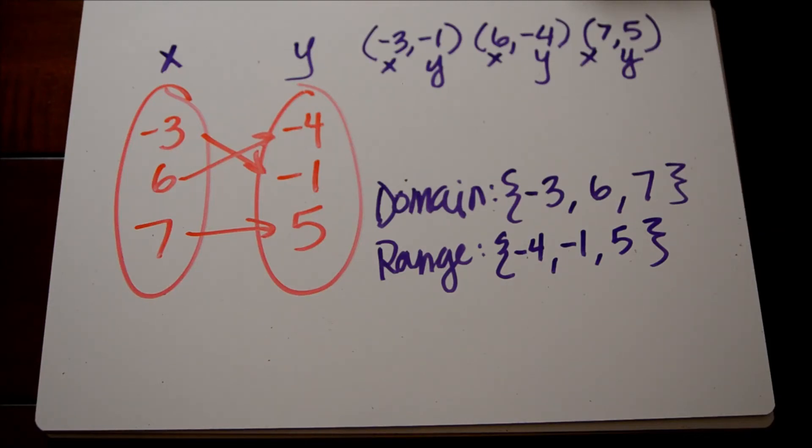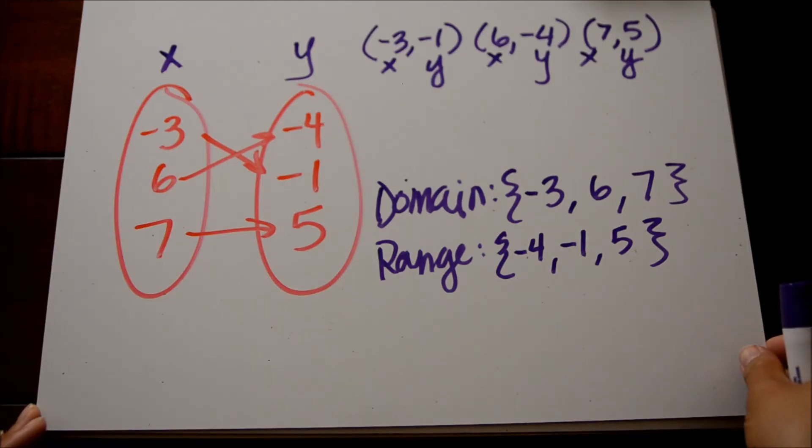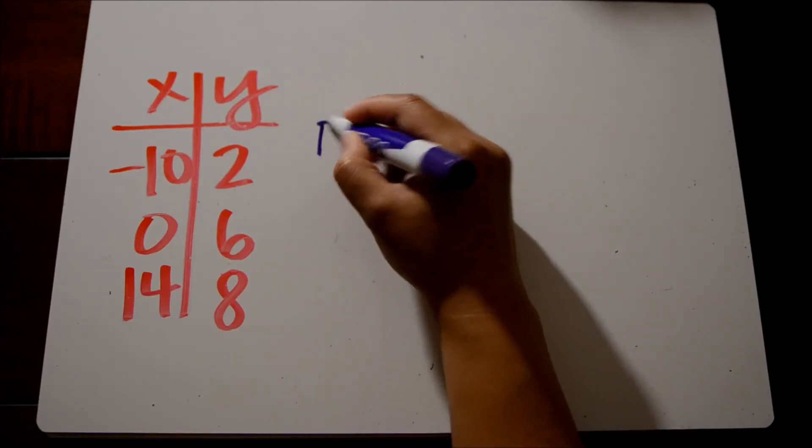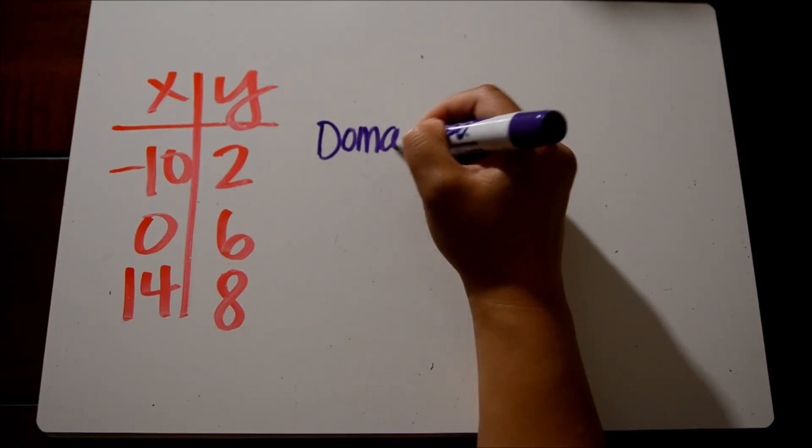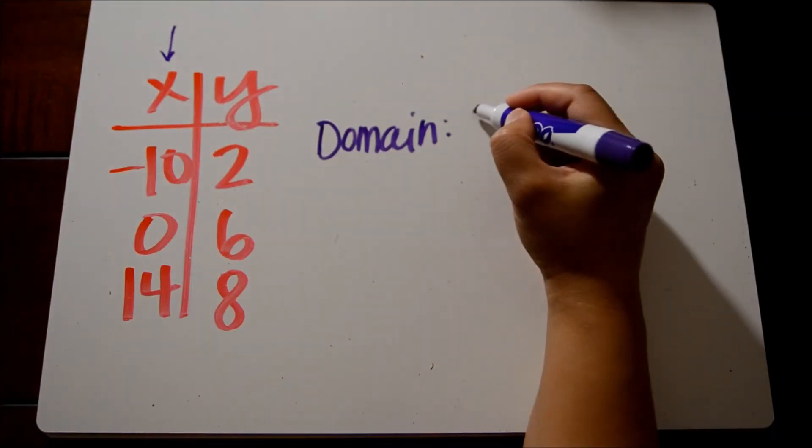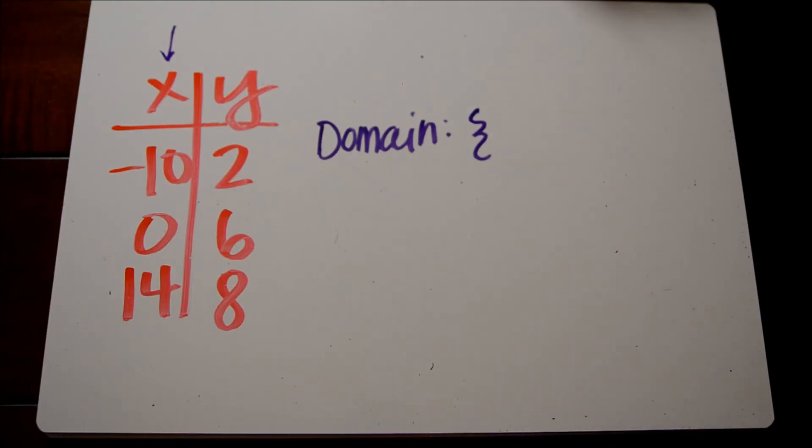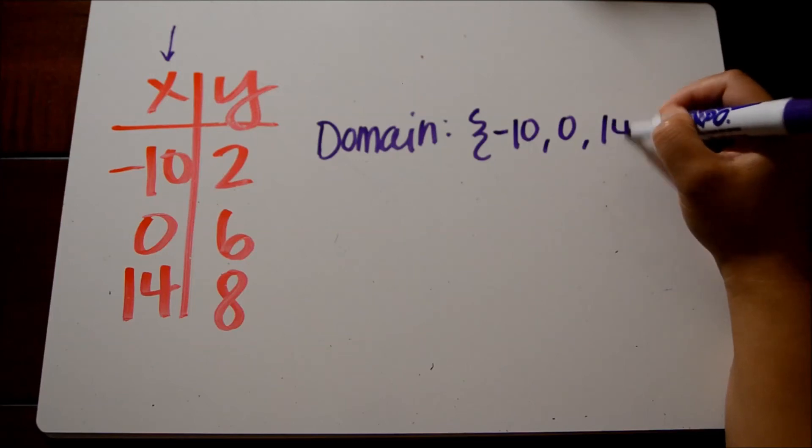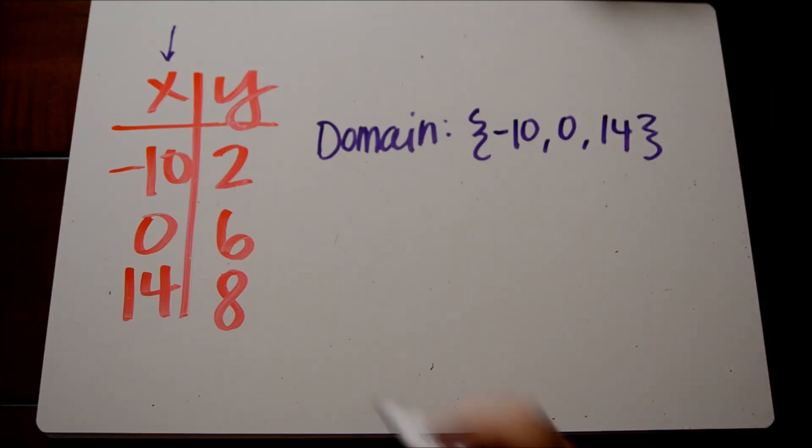Let's take a look at another example. Here we have a table. A table is another way of showing a relationship between an x and a y value. This is a little more straightforward though, because our x values are listed together in the first column and our y values are listed together in the second column. So our domain is negative 10, 0, and 14. Those are the x values in this relationship.